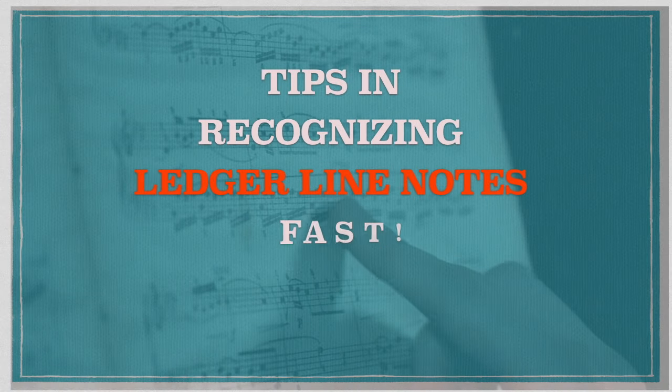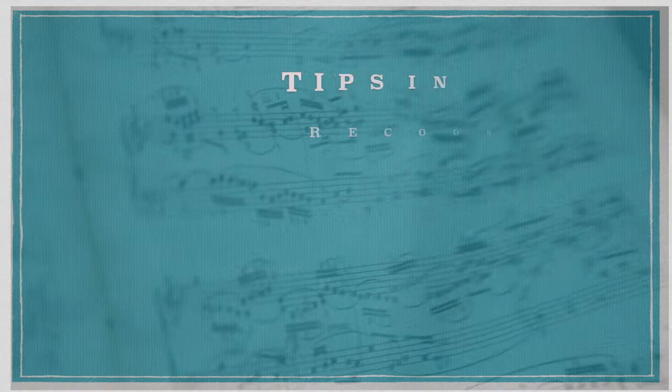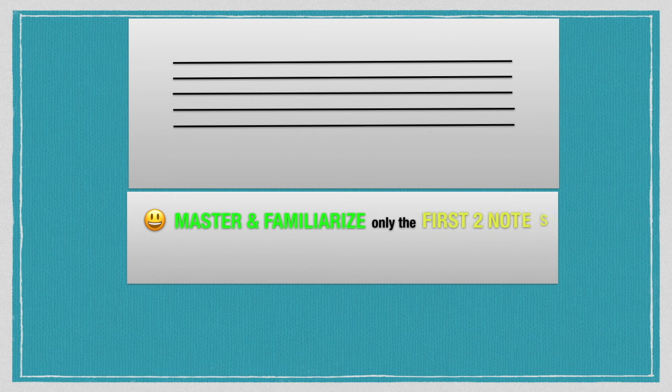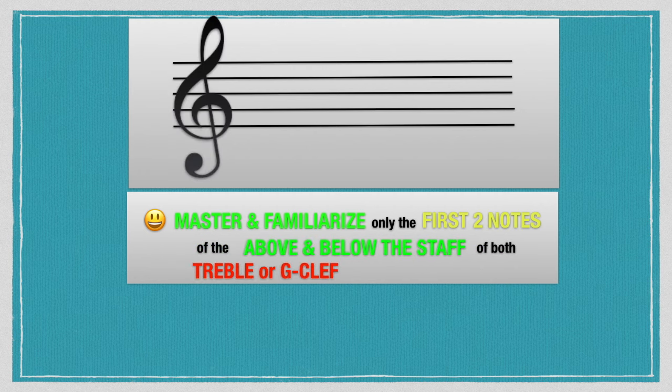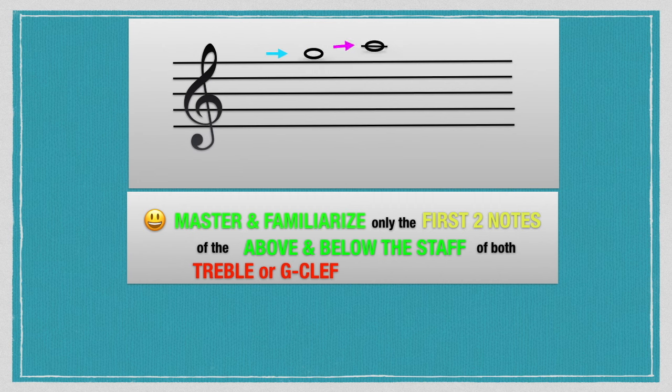There are tips for recognizing ledger line notes fast. First, familiarize yourself with only the first two notes above and below the staff for both treble and bass clef. For the treble clef, those are G and A above, and D and C below. For the bass clef, they are B and C above, and F and E below. The succeeding notes beyond the first two you've mastered will be easily recognized later.